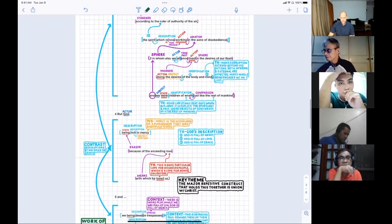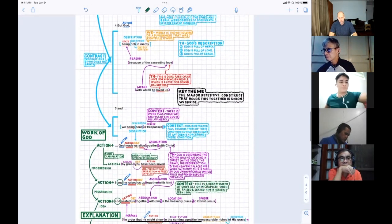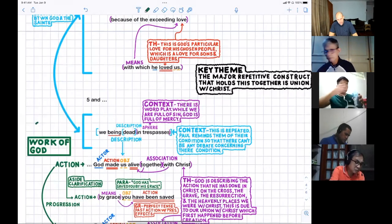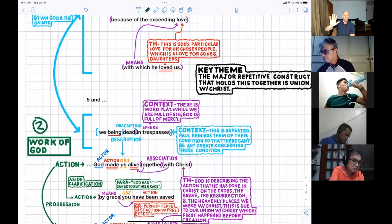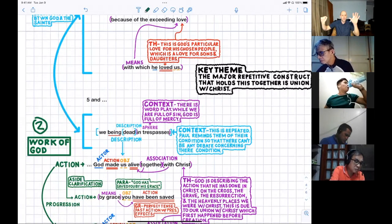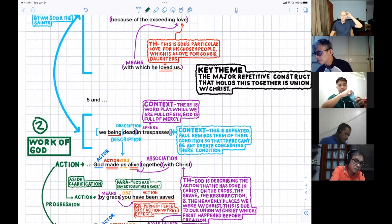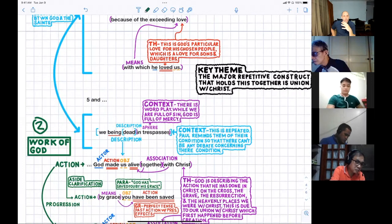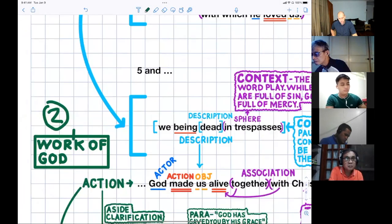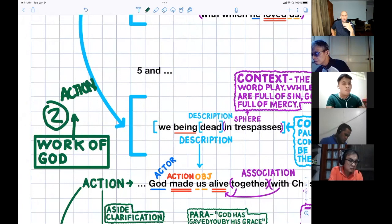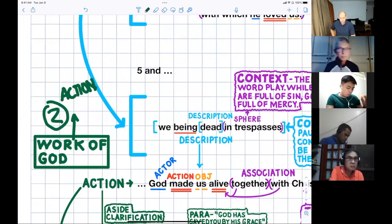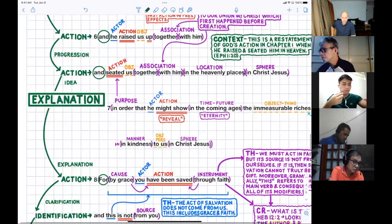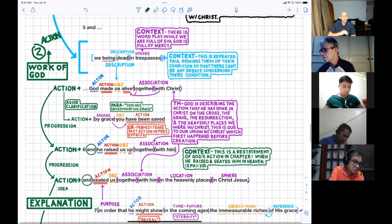The second major point: in verses one to four, it's all these descriptive things. This is who we are, this is what we're doing, this is God—He's rich in mercy, full of love. Then the next major point moves from description to the actual work. When I'm talking about work, I'm thinking specifically about action. The work of God is God's action.